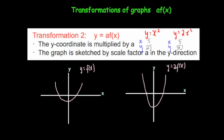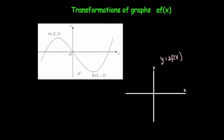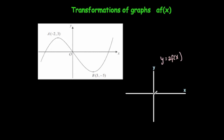Let's have a look at an exam question. Here we've got a graph with a maximum turning point at minus 2, 3 and a minimum at 3, minus 5, and it goes through the origin. We're drawing y equals 2f of x, so we're multiplying all the heights by 2. If the height is 0 at the origin, doubling that gives 0, so it's still going to go through the origin and still cross at the same x-intercept points.